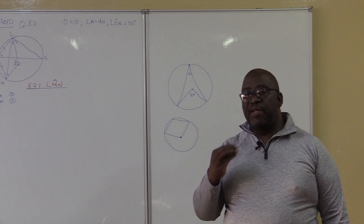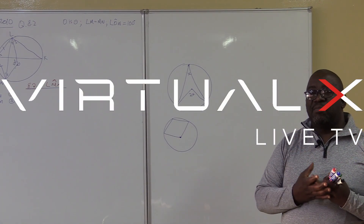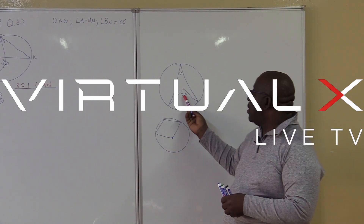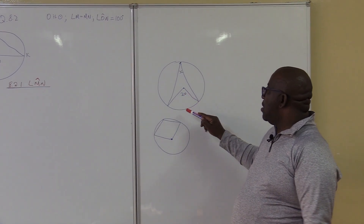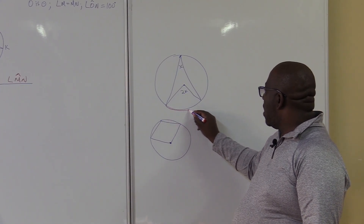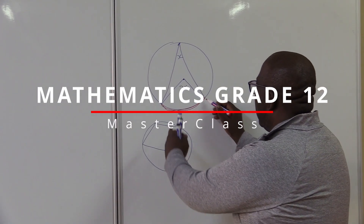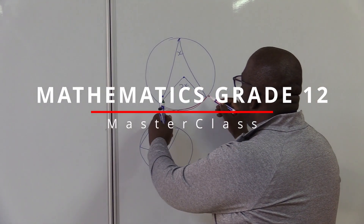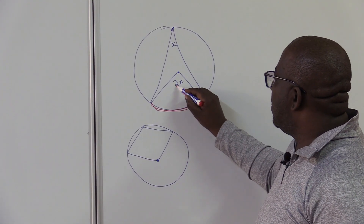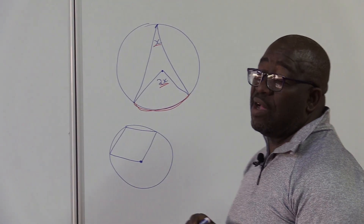It's important that you understand that the center theorem cannot always come in a standard position. This is the arc, and this arc subtends this angle at the center and subtends that one at the circumference. So the one at the center is two times that one at the circumference.